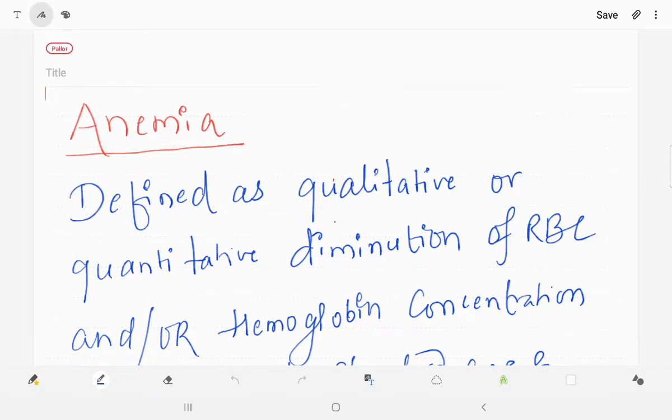Hello everyone, we are going to talk about anemia and pallor. We'll be talking more on clinical aspects of anemia and why we look for pallor. First of all, we need to know what is anemia. Anemia can be defined as qualitative or quantitative diminution of RBC and/or hemoglobin concentration in relation to standard age and sex.